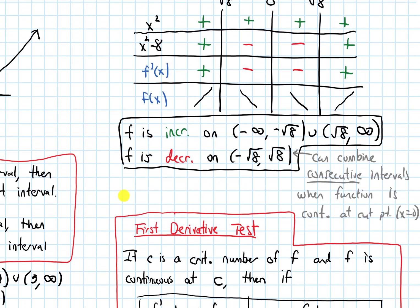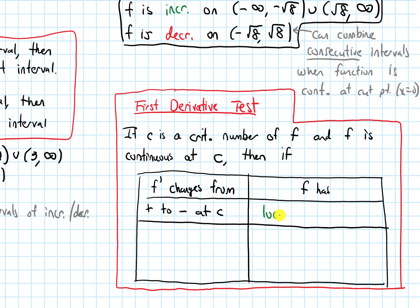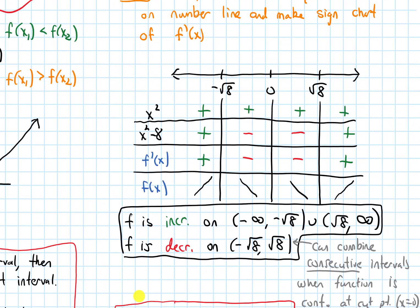Next we're ready to state the first derivative test. If c is a critical number of f and f is continuous at c, then: if f prime changes from positive to negative at c, then f has a local max at c. Looking at our picture, that happens at negative root 8 — the derivative changes from positive to negative, meaning the original function changes from increasing to decreasing, which gives a local max at negative root 8.